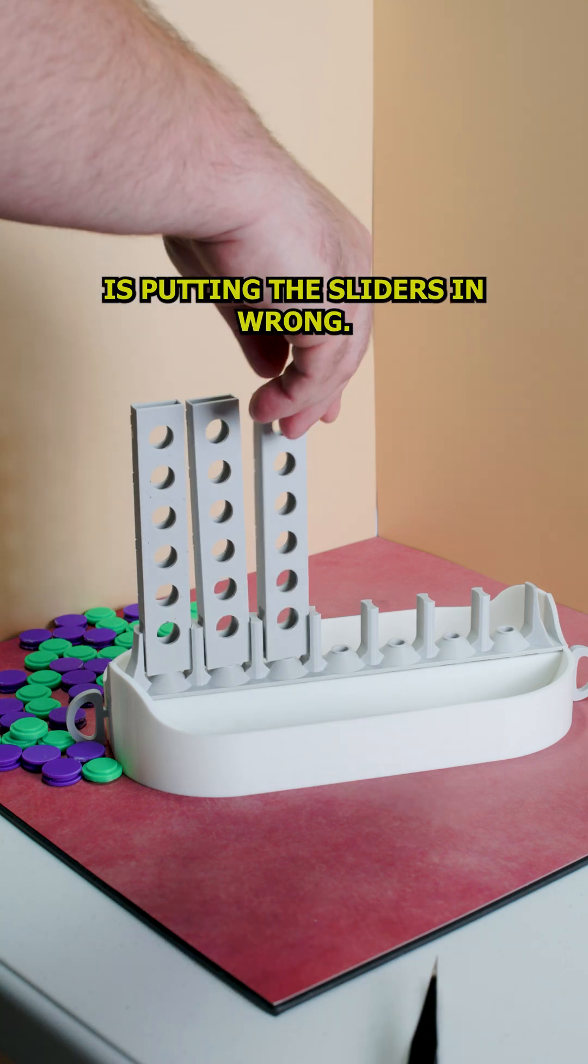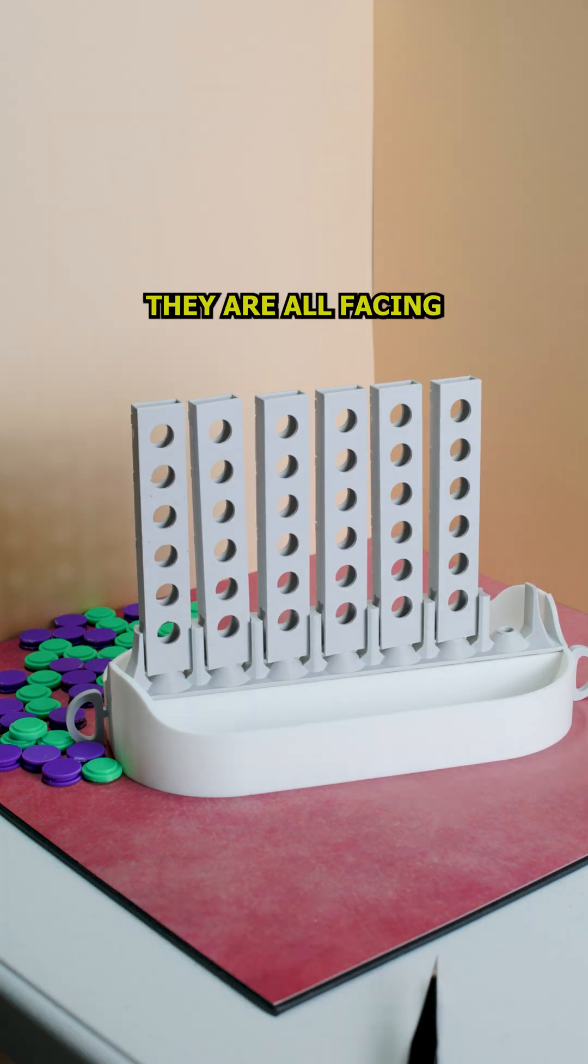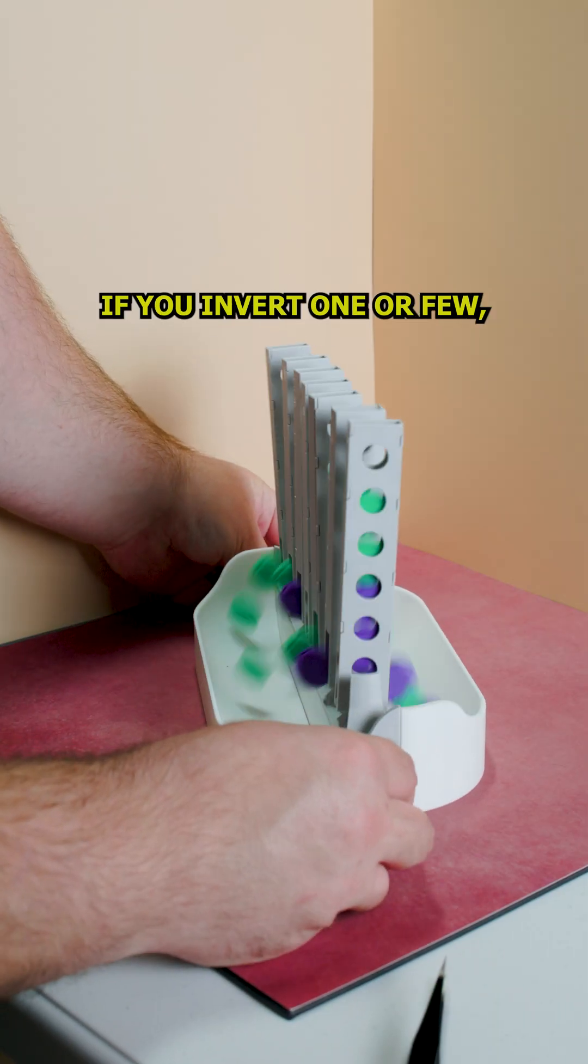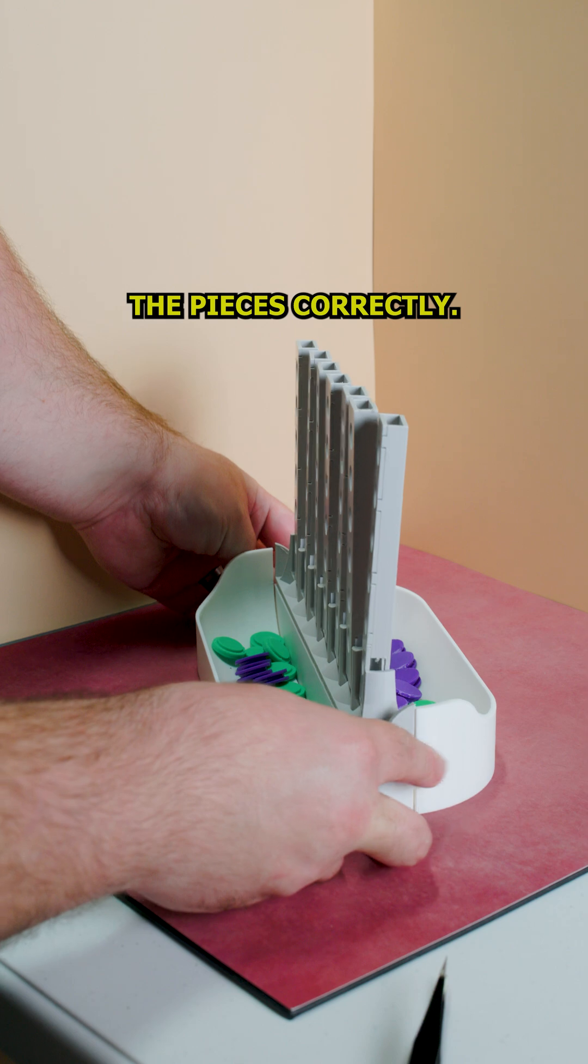The second mistake you can make is putting the sliders in wrong. You have to make sure they are all facing the same direction. You can see which faces are the same by the pins and slots from the assembly. If you invert one or a few, the game will not sort the pieces correctly.